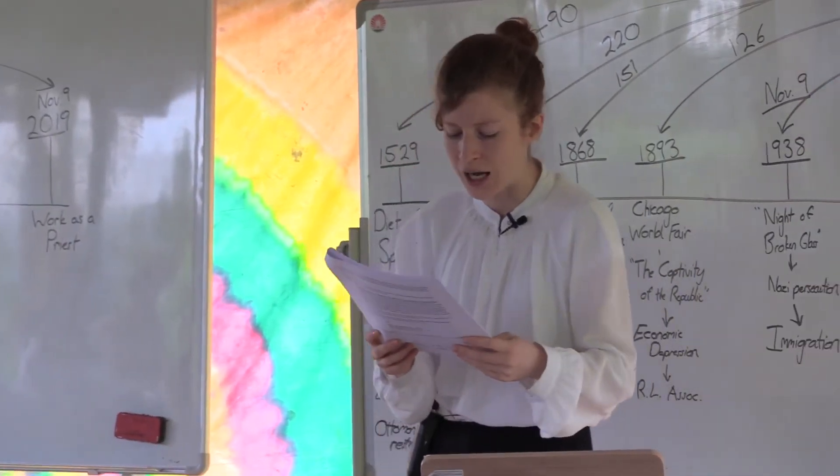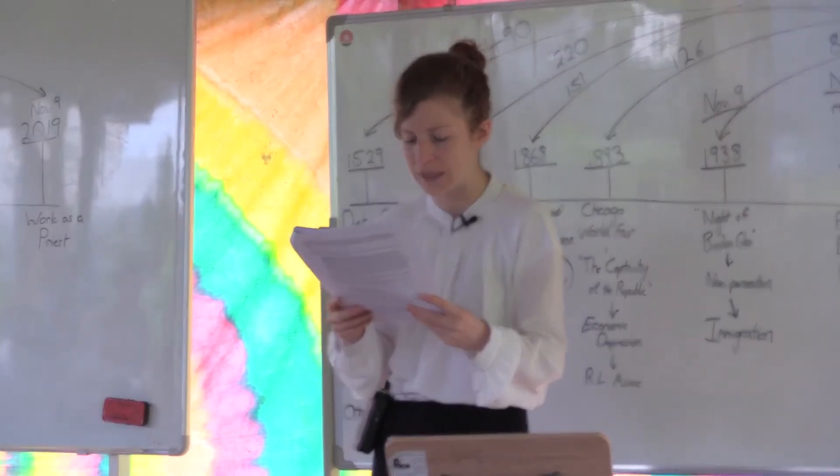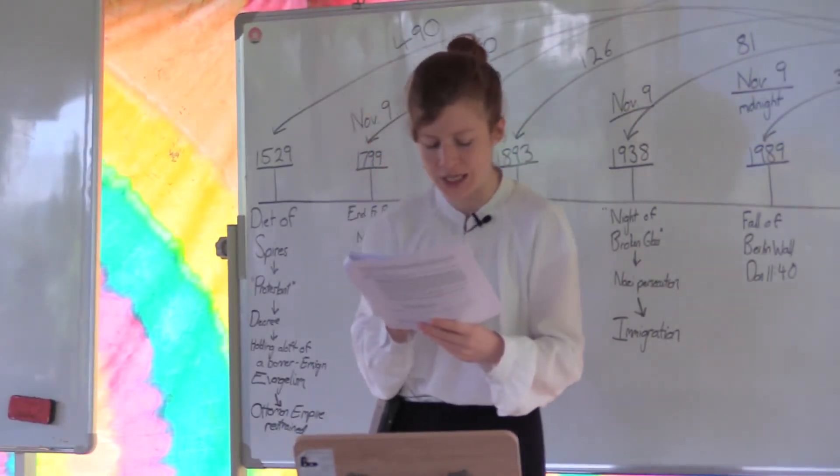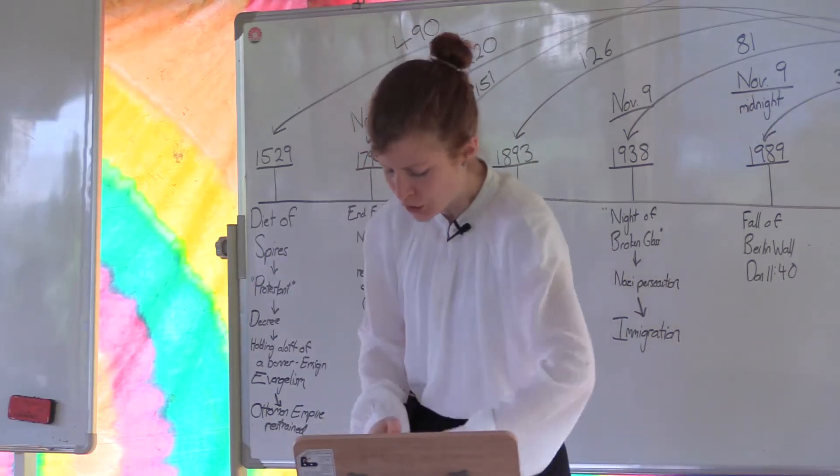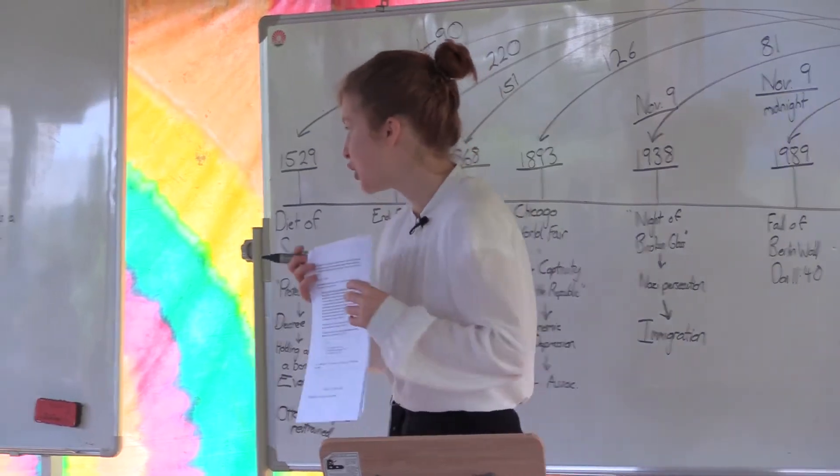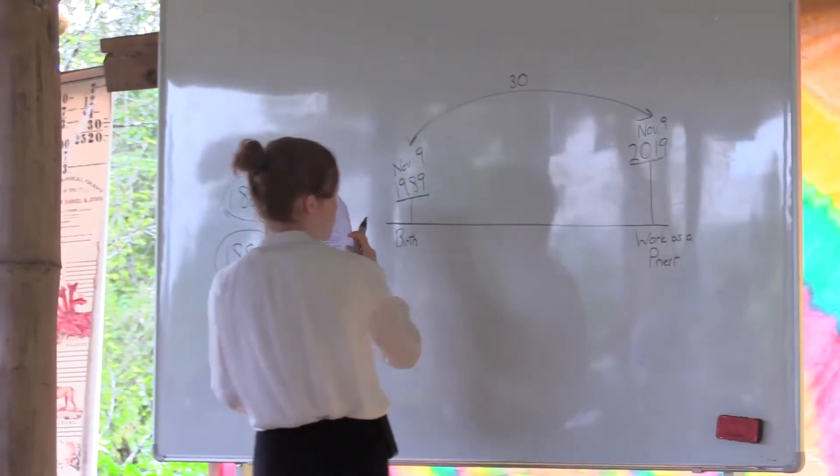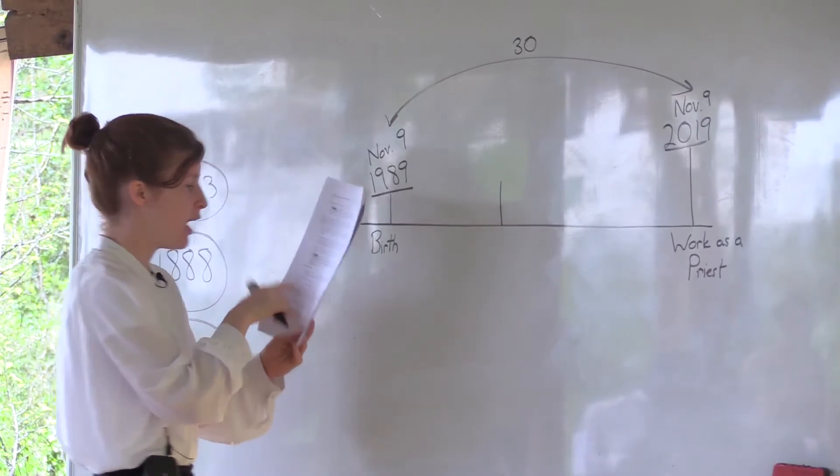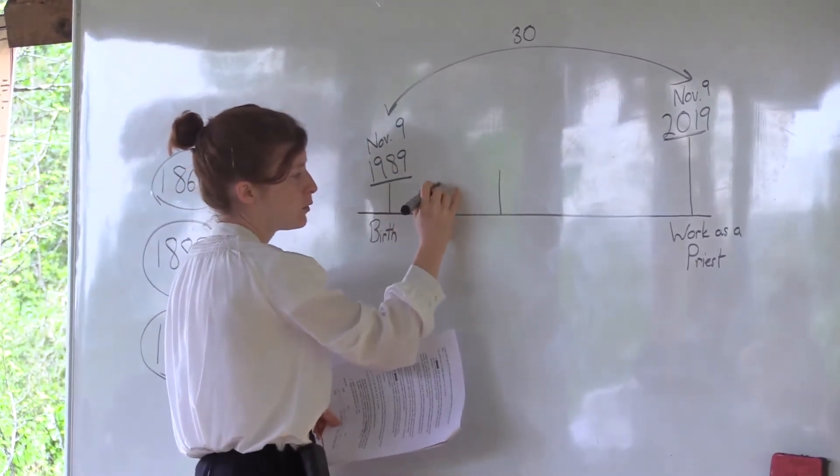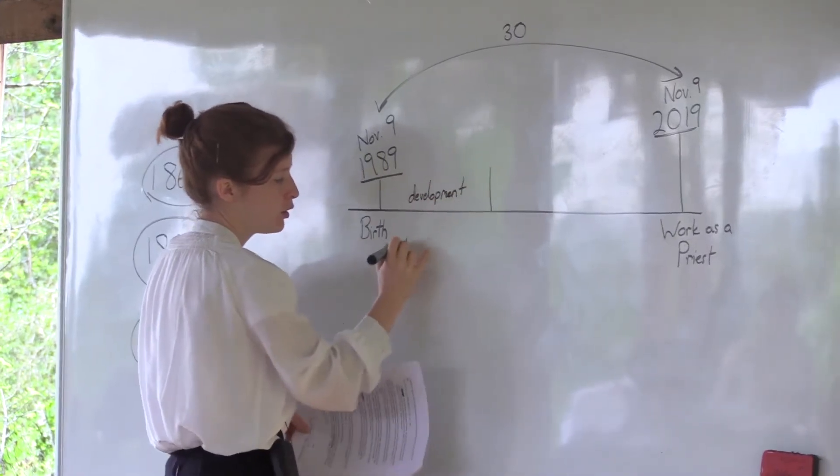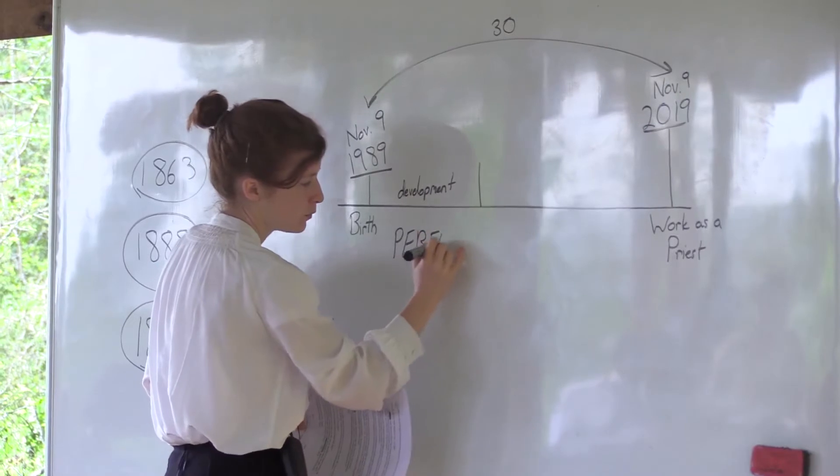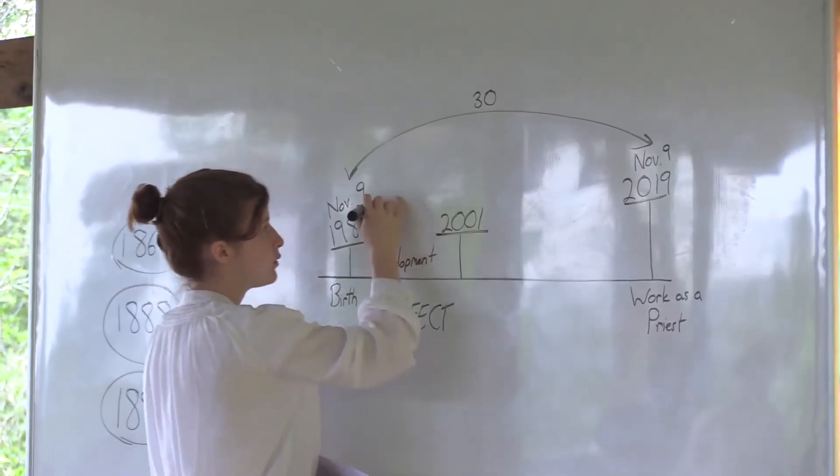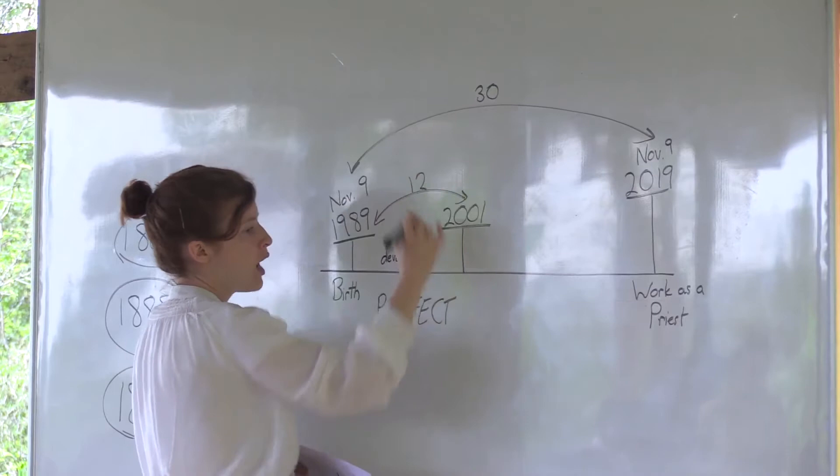Ellen White says Jesus was our example in all things and he was an earnest and constant worker. He commenced his life of usefulness in childhood. At the age of twelve he was about his father's business. Between the ages of twelve and thirty, before entering upon his public ministry, he led a life of active industry. So she divides Christ's life up into three periods of time. You have birth to the age of twelve, and this is his development. But is he perfect in his development? Perfect.